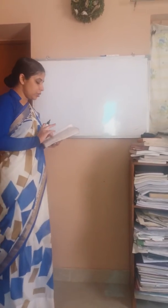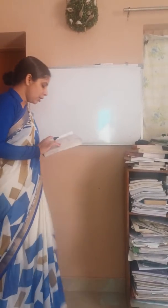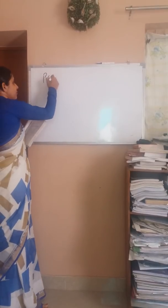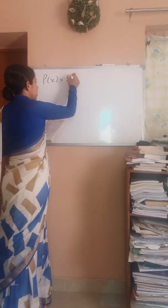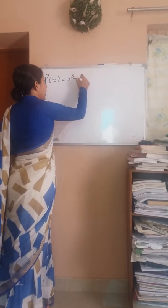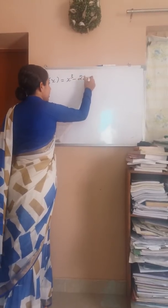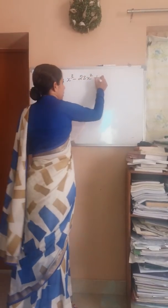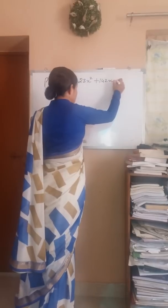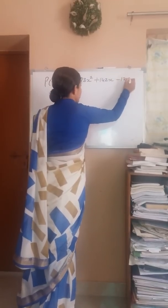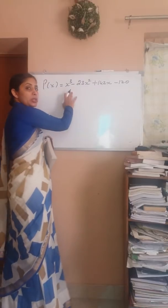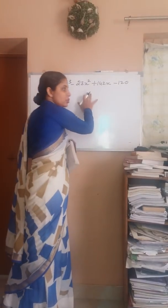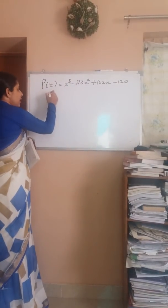Now I'll explain how to factorize cubic polynomials. Suppose we have the polynomial p(x) = x³ - 23x² + 142x - 120. Since it is a cubic polynomial, there are three factors of it, so by trial method we'll find out the first factor.